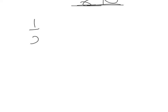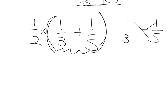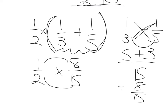Next one, we've got a half times bracket 1 third plus 1 fifth. We're thinking about BODMAS — order of operations. We've got a multiply and a bracket, so BODMAS tells me to do the bracket first. Using kiss and smile inside the bracket: 1 times 5 is 5 plus 1 times 3 is 3, over 3 times 5 is 15, giving 8 over 15. Then it's 1 half times 8 over 15, which gives 8 over 30, simplified to 4 over 15.